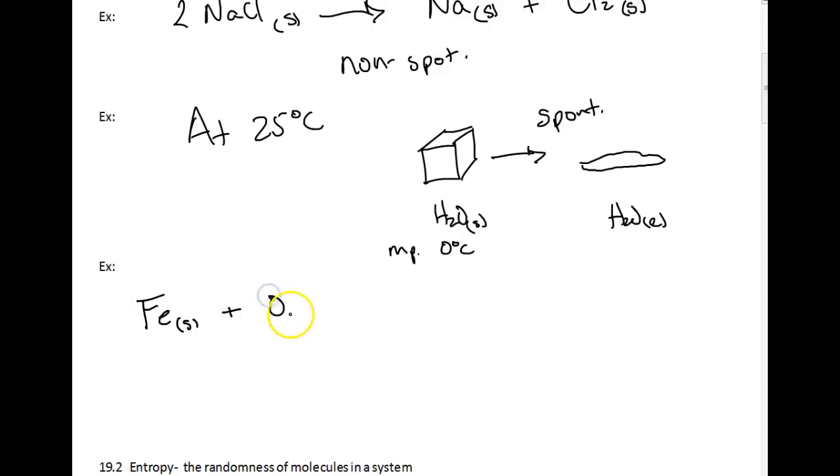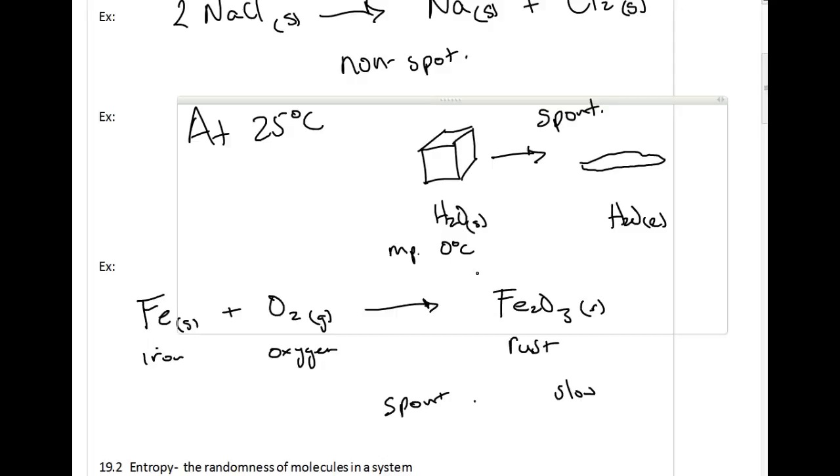I'll give you another example of a spontaneous process. If we take solid iron and expose it to oxygen gas, what's going to happen in a very slow reaction is this is going to turn into iron 3 oxide, which is also known as rust. So we would expect metal, iron, to rust over time if left out in the elements, and this does happen. This reaction is definitely spontaneous, but it's also very slow. So we're not really looking at kinetics of the reaction right now, how fast or slow it's going. We're just looking at whether or not it does happen. And if we wanted to reverse this reaction, that would definitely be non-spontaneous. Rusty metal does not automatically reverse itself.